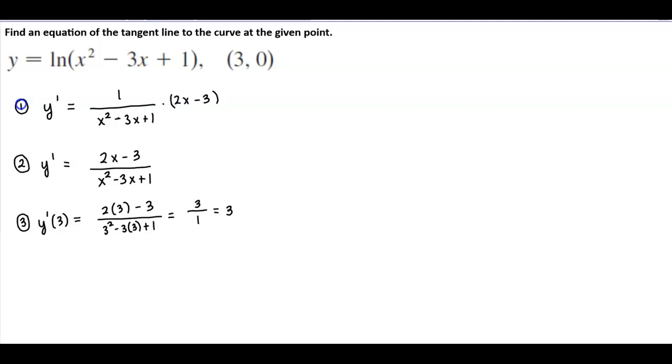So now we know that the slope is 3. So we can then say in step 4, we have our point (3, 0) with our slope m which is equal to 3. And so we're going to use the point slope form. y minus y1 equals m times x minus x1. So we have y minus 0, which is equal to 3 times x minus 3.